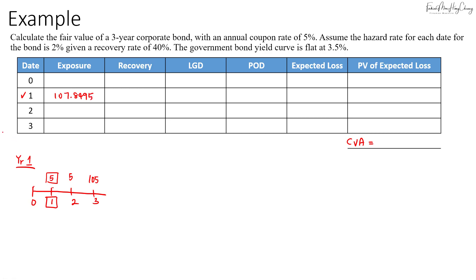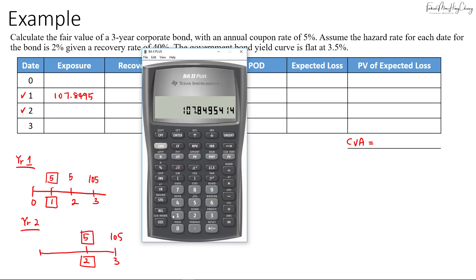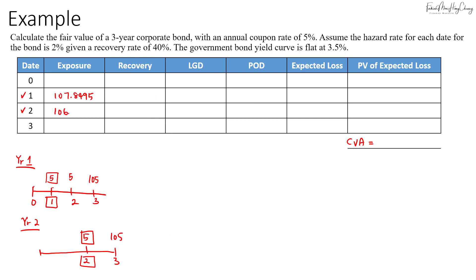Moving on to date two: there is one year left until expiry where you receive 105 dollars, plus a coupon of five dollars at year two. Set N=1, PMT=5, FV=100, I/Y=3.5%, compute PV = 101.4493. Adding the coupon of five dollars gives an exposure of 106.4493. Lastly, in year three you simply receive 105 dollars, so no further calculation is needed.